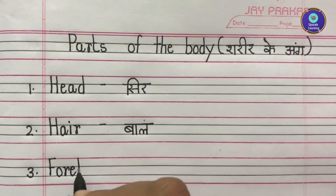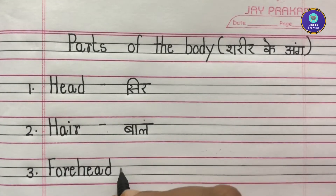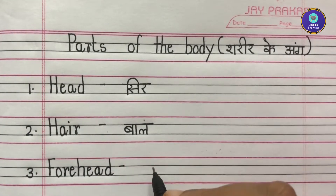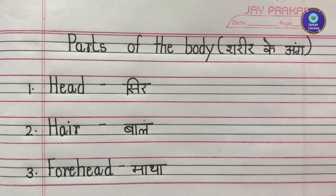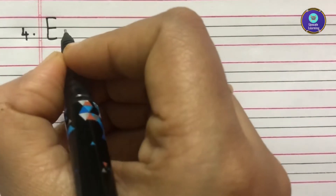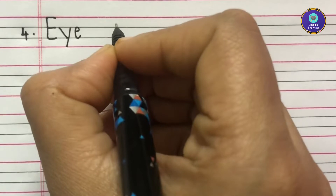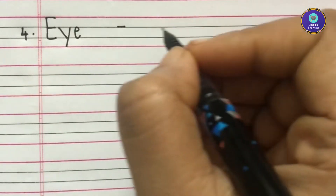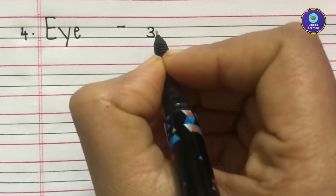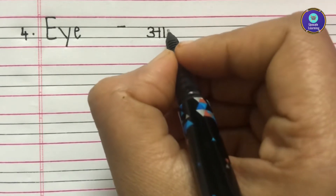Third one is Forehead, F-O-R-E-H-E-A-D. Forehead ko hum Hindi mein Maata kehtae hain. Fourth one is Eye, E-Y-E. Eye ko hum Hindi mein Aankh kehtae hain.